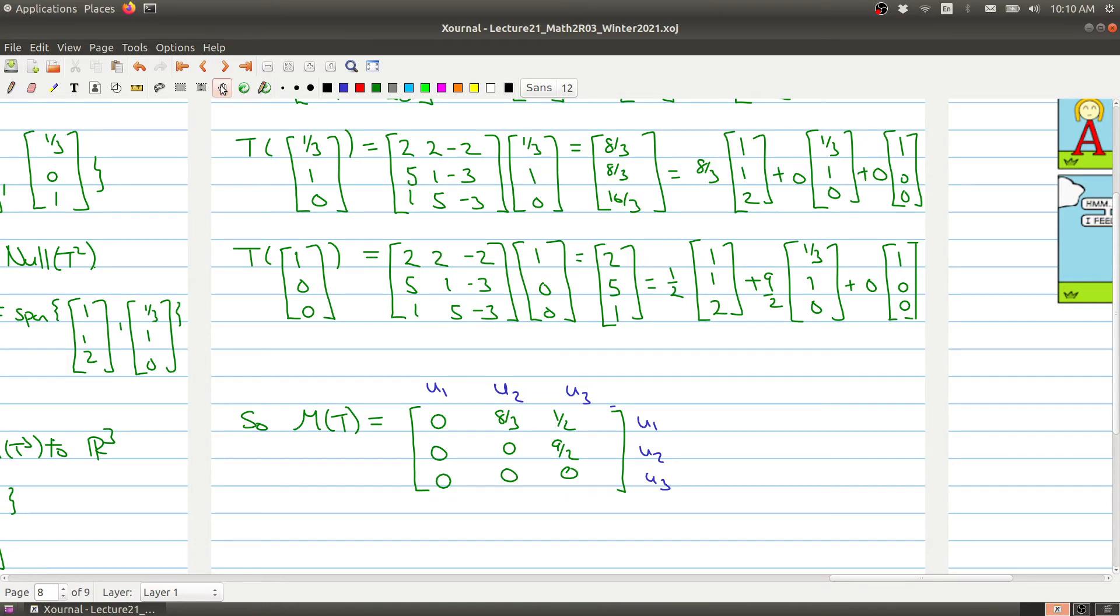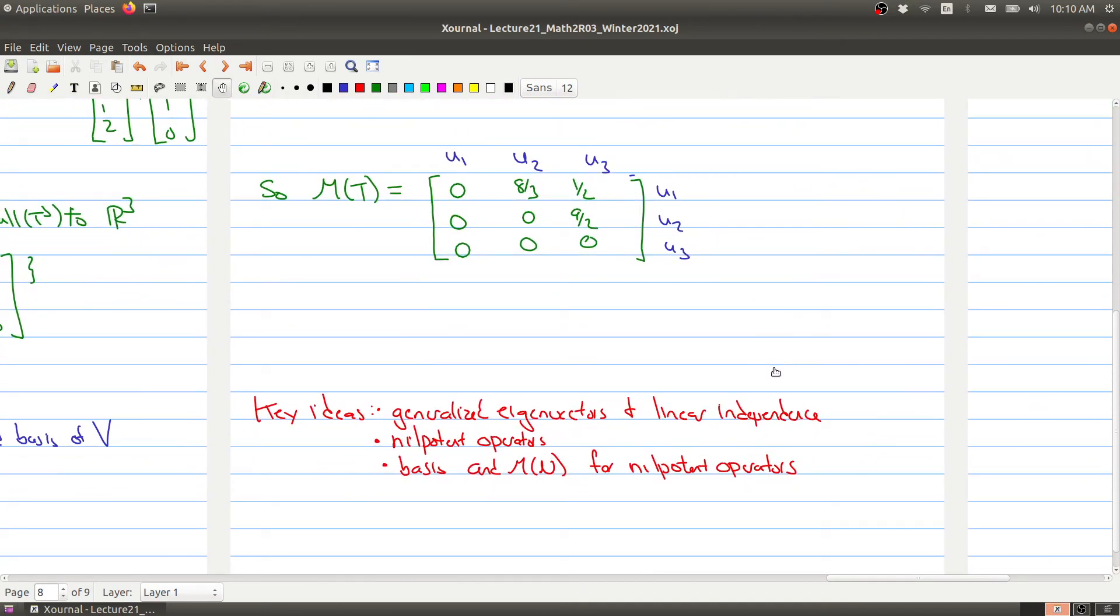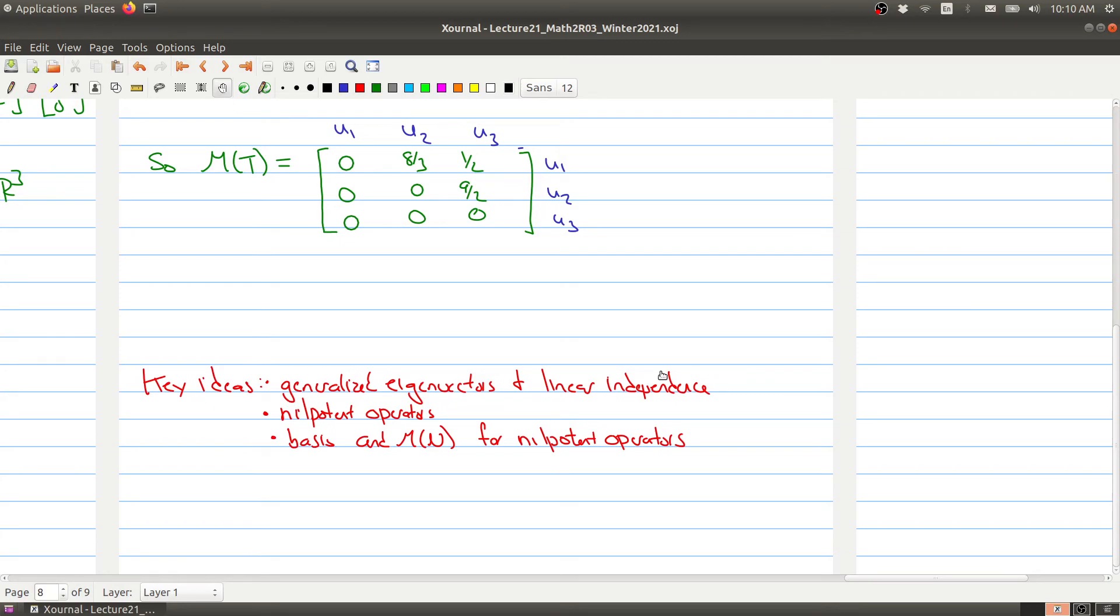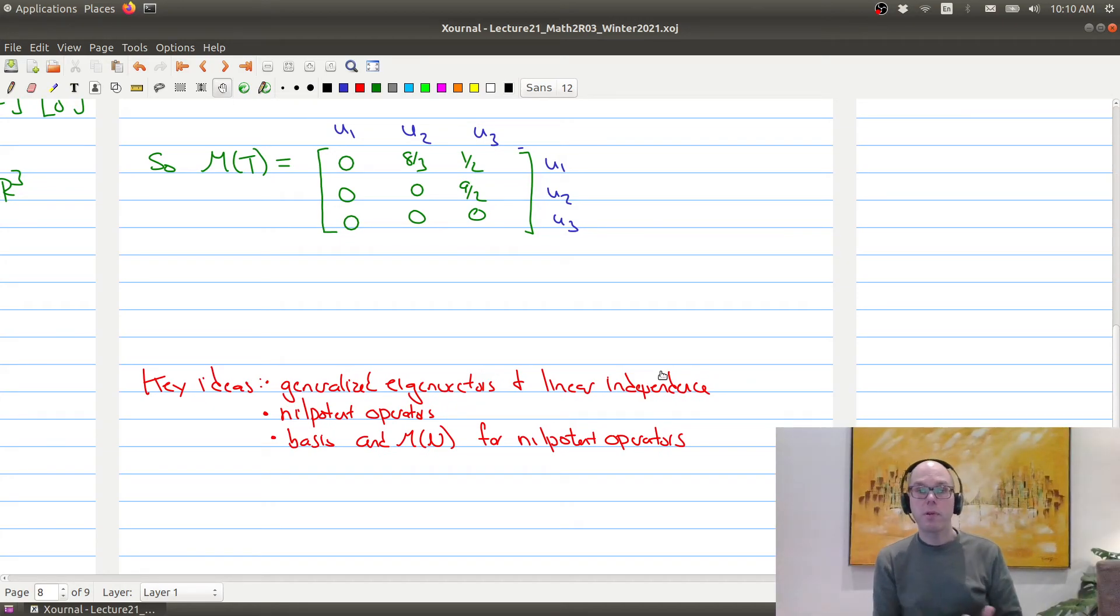I realize that there was a lot going on in today's lecture. So just let me summarize some of the key ideas from today. So the first big idea from today's lecture is we talked about generalized eigenvectors, and we showed that they have a linear independence property. So that will be kind of useful going forward.